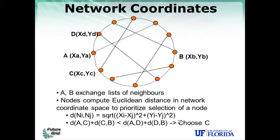In this example, A and B have several possible neighbors to consider. The nodes compute the distance through a proxy node in this natural coordinate space and use that distance to prioritize which node to establish an edge with. If the Euclidean distance through C (AC + CB) is smaller than through D (ADB), then C will be chosen as the proxy node.